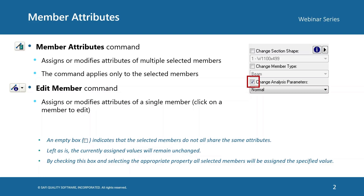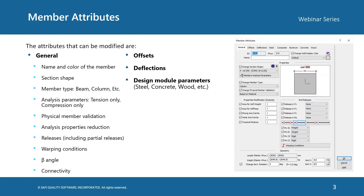The member attributes are organized using different tabs. In the General tab, we can edit the name and the color of the member, the section shape, the member type, the analysis parameter, the physical member validation, the analysis properties, the reduction, the end releases, the warping conditions, the beta angle, and the connectivity.